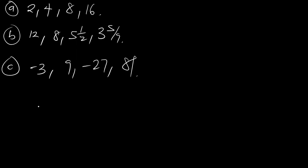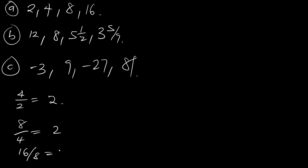Now if you look at these sequences of numbers critically, you'll see that they have common features. Let's look at the first one, which is A. You look at A: 4 divided by 2 is equal to 2, 8 divided by 4 is equal to 2, 16 divided by 8 is equal to 2. So if you find the ratio of the consecutive terms, you'll notice that the ratio is a constant.